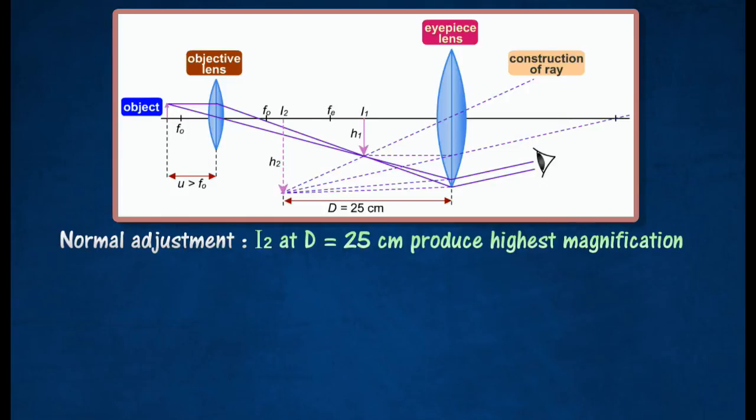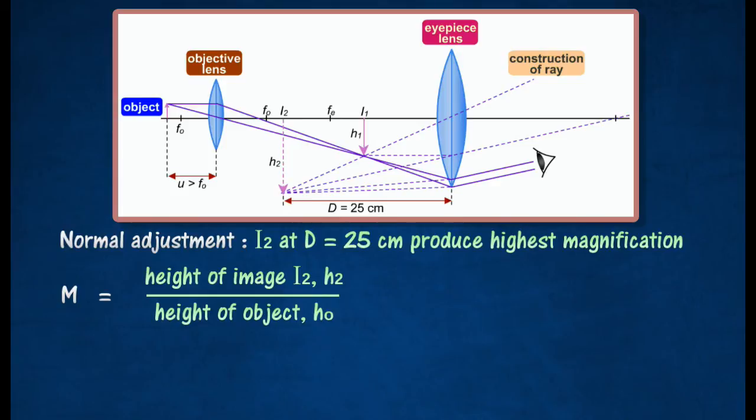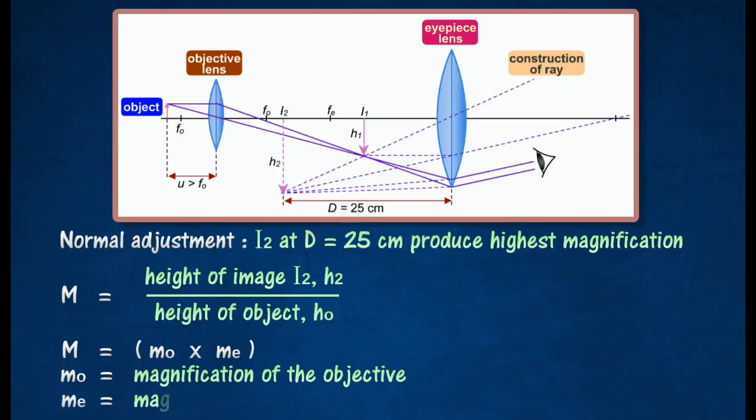The magnification M of a compound microscope can be calculated from the formula where MO equals magnification of the objective, and ME equals magnification of the eyepiece.